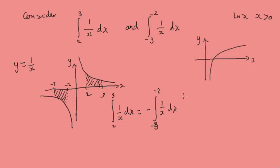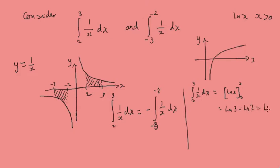If we evaluate the integral between 2 and 3 of 1 over x dx, we get log x evaluated between 2 and 3, which gives log 3 minus log 2, which equals log(3/2). That implies the integral between minus 3 and minus 2 of 1 over x dx equals minus log(3/2), which is the same as log(2/3).